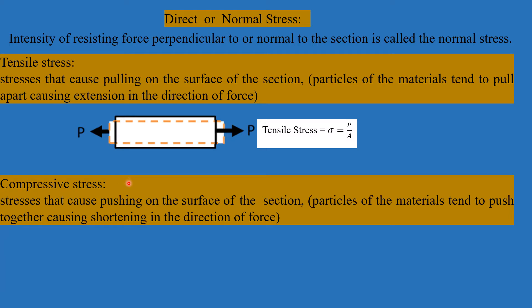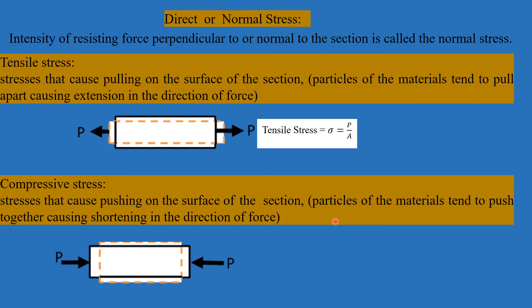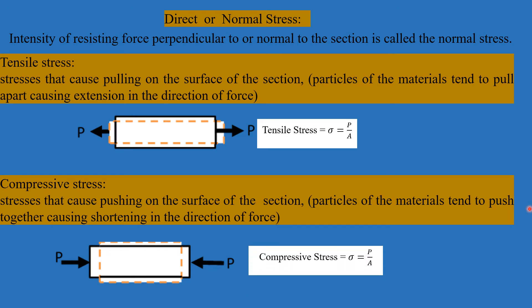Compressive stress is another type of normal stress. Here, two pushing forces are acting in the same direction along the axis of the bar. Because of this pushing force, the length of the bar becomes reduced, and its formula is sigma equals P divided by A.